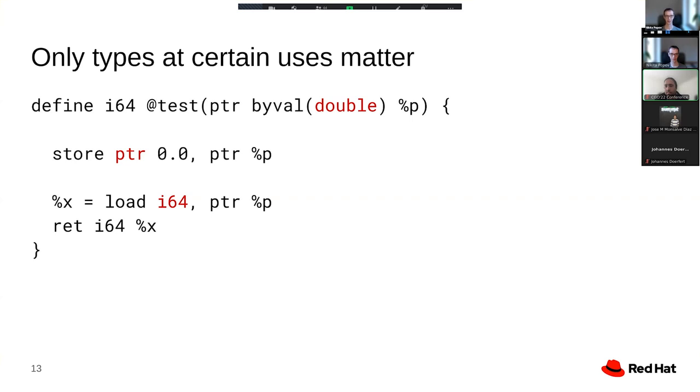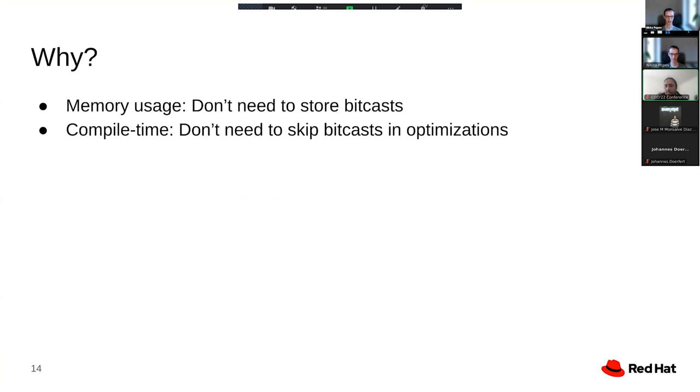From that we can derive quite a few practical impacts. The first one is that if we have opaque pointers, we no longer need pointer bit casts. And if we don't need them, we don't need to store them in memory. And optimizations don't have to skip past those bit casts, which means we improve memory usage and compile time in LLVM.